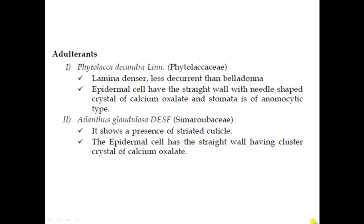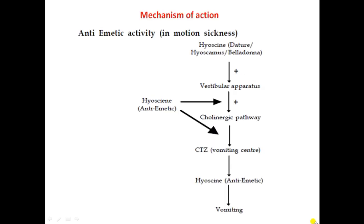Mechanism — antiemetic property of belladonna: Hyoscine present in belladonna is used in belladonna patches placed on the back of the skin. When the body is in motion, the vestibular apparatus generates a cholinergic pathway with ACH release that activates the vomiting center. Hyoscine, being anticholinergic, blocks this pathway and prevents motion sickness.